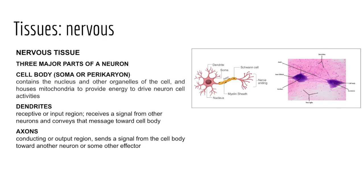The two types of cell processes are dendrites and axons. Dendrites are often tapered, highly branched, and usually short; they are the major receptive portion of the neuron, receiving signals from other neurons and conveying them toward the cell body. The axon is a long, single, thin, cylindrical process that serves as the conducting region, transmitting an action potential away from the cell body to another neuron or an effector such as a gland, muscle, or organ.